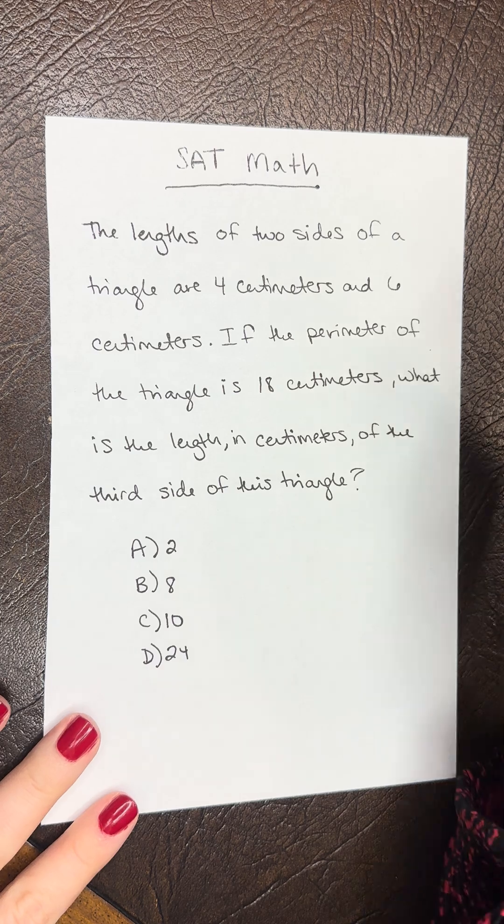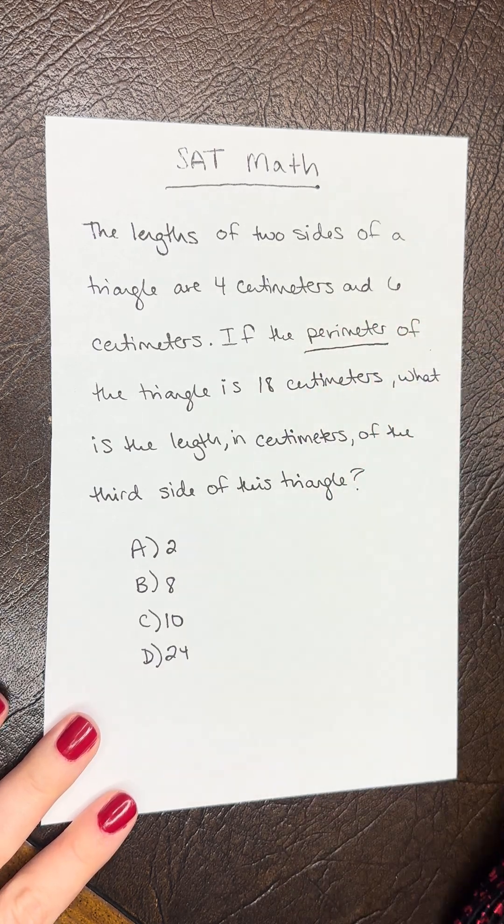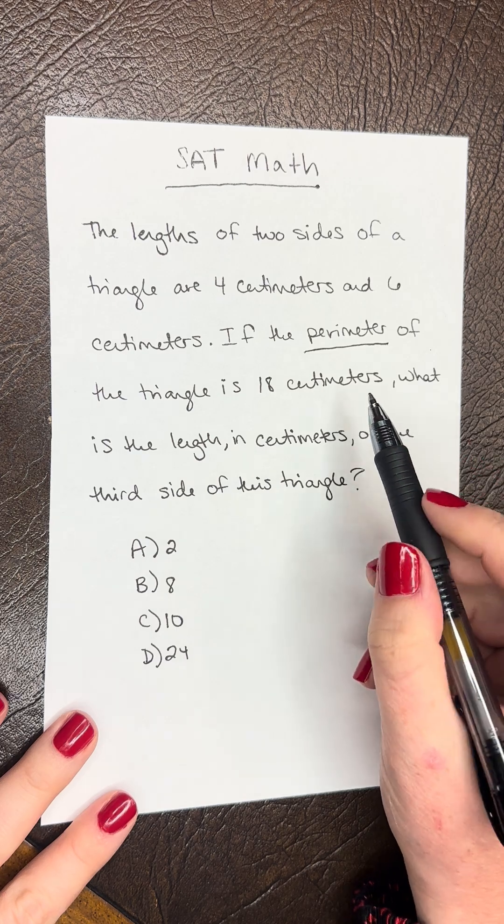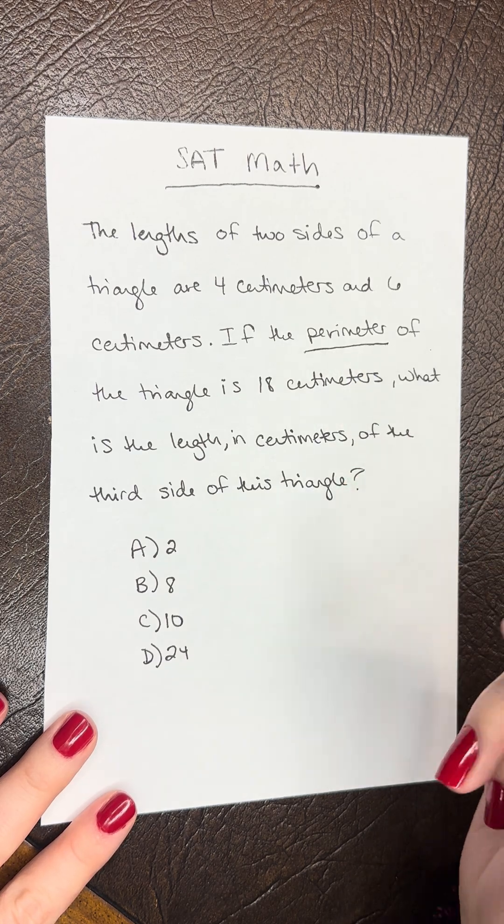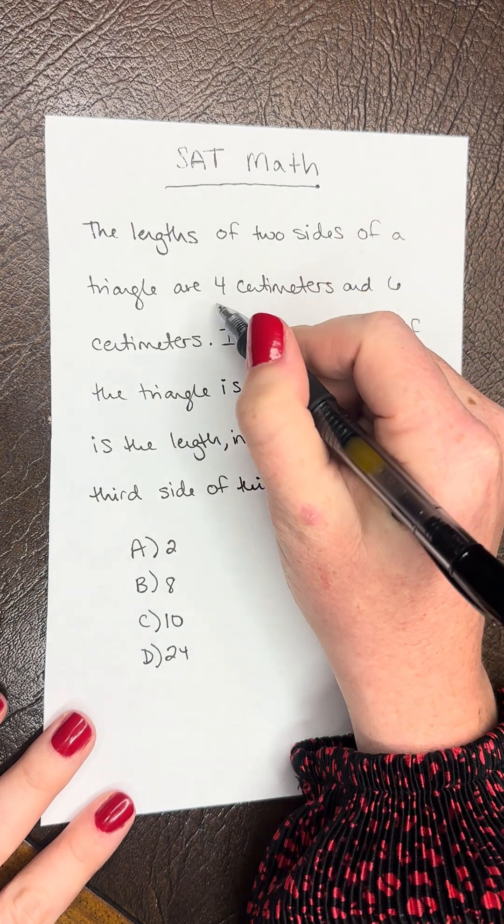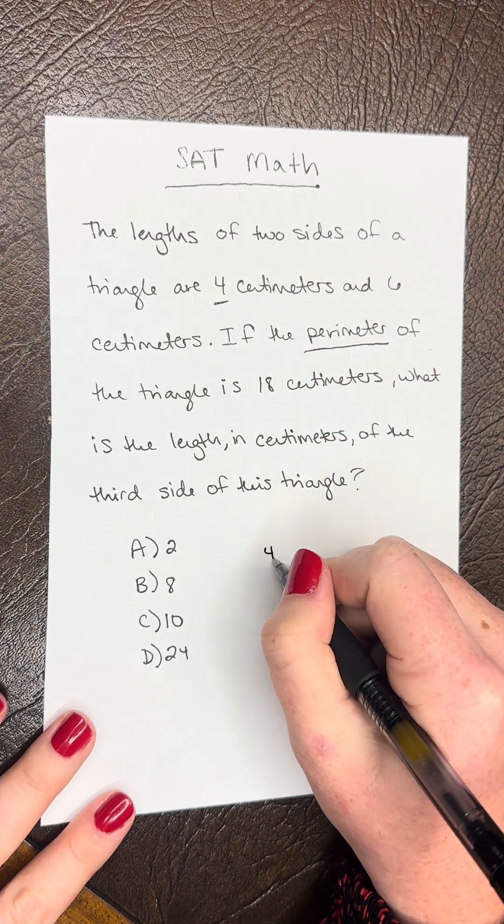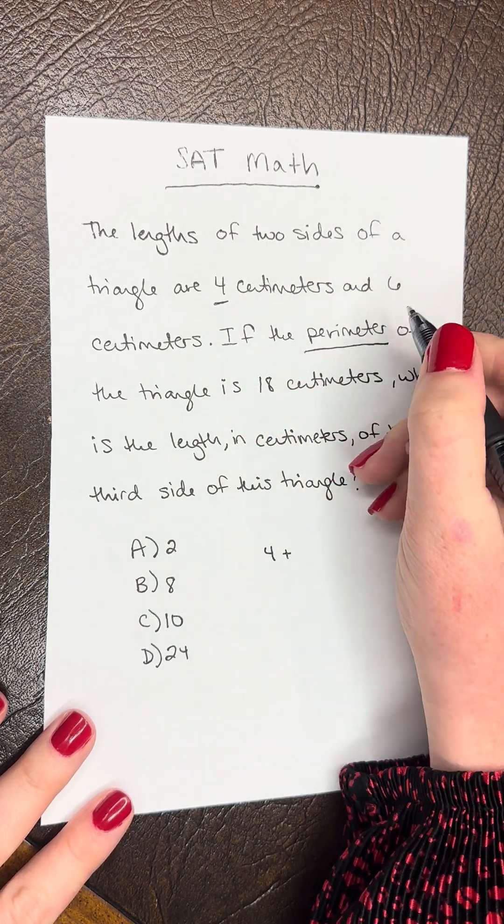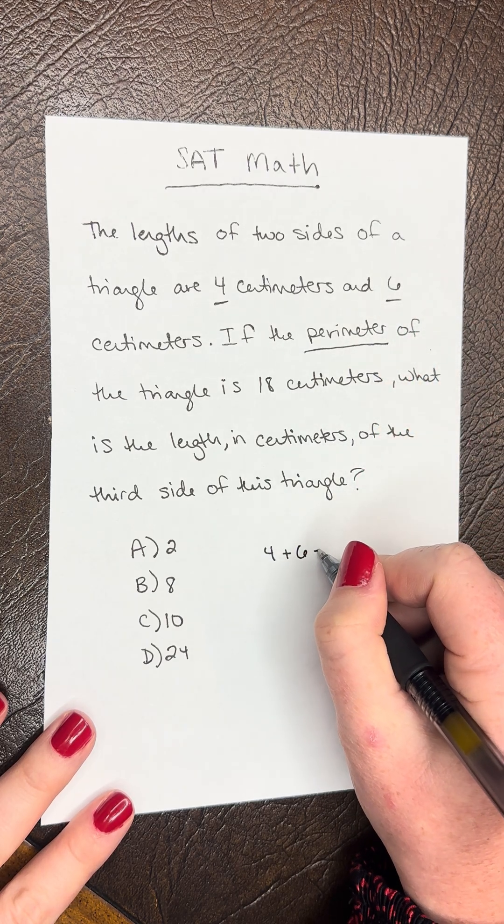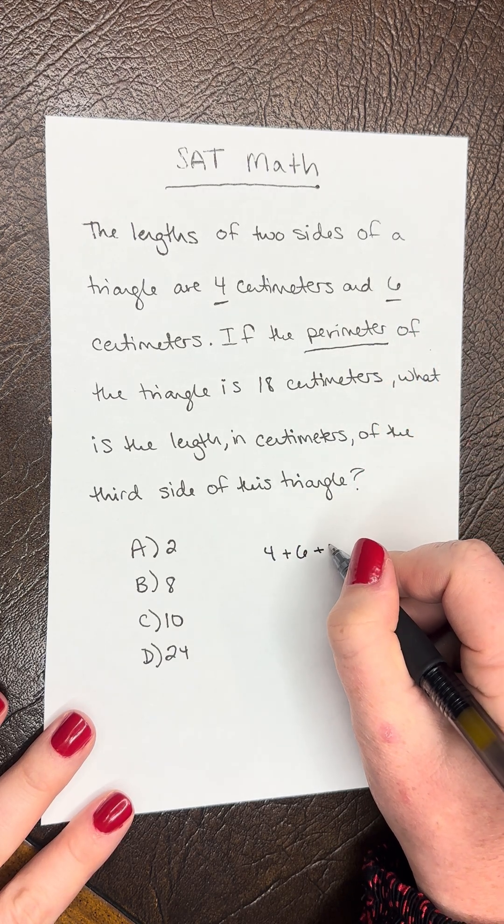Here we are working with perimeter. We know that all of our sides of the triangle are going to add to the perimeter. We have one side which is 4, another which is 6, and we don't know the third side. Let's call that x.